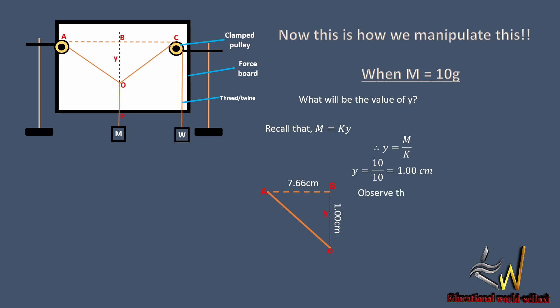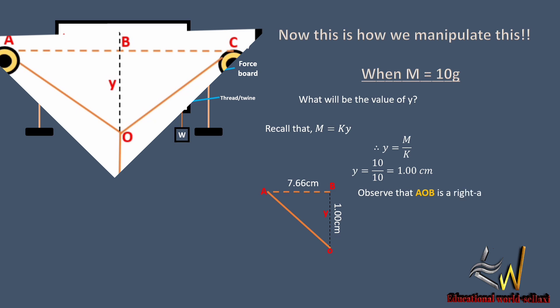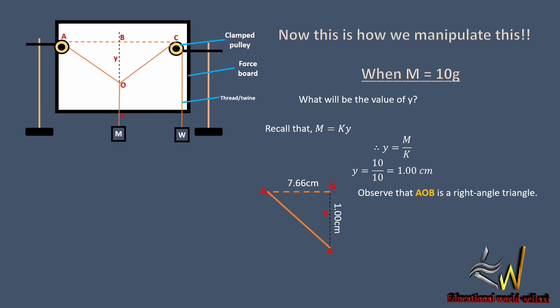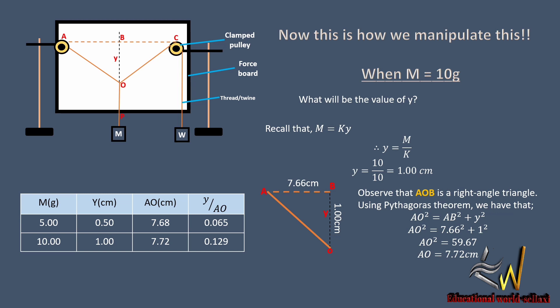So we are going to consider a section of the triangle which is a right angle triangle AOB. We observe that it is a right angle triangle. Putting the values, AB equals 7.66 and the displacement y is 1.0 cm. We are going to use Pythagoras theorem to evaluate AO. So we have that AO squared equals AB squared plus y squared. Substituting the values and solving for AO, AO squared equals 59.67. AO will now be 7.72 centimeters.